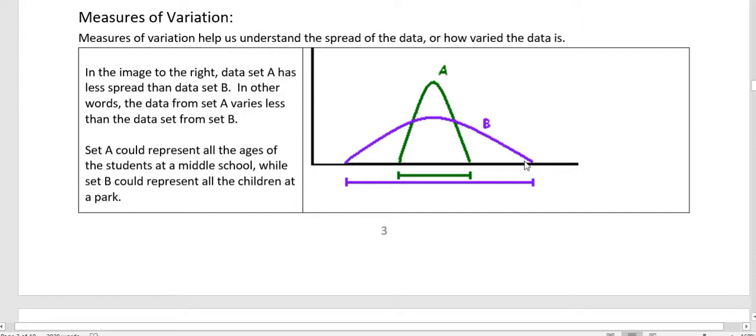If you think about this as data sets, set A could represent the ages of all the students at a middle school. And that wouldn't range that much, maybe three or four years at the most. While set B could represent all the children at a park. And maybe there could be kids there that are two years old and somebody that's 14 or 15 years old. So those ages would range more and we'd see more spread in our data.